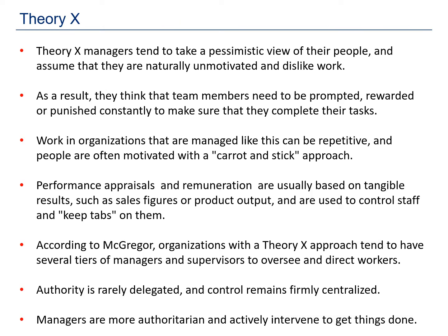Let us understand the characteristics of Theory X in detail. Theory X managers tend to take a pessimistic — meaning negative — view of their people and assume they are naturally unmotivated and dislike work. They think team members need to be prompted, rewarded, or punished constantly to complete their tasks. Organizations with a Theory X approach tend to have several tiers of managers and supervisors to oversee workers. Authority is rarely delegated and control remains firmly centralized. Managers are more authoritarian and actively intervene to get things done.